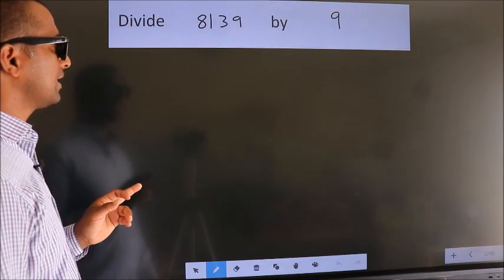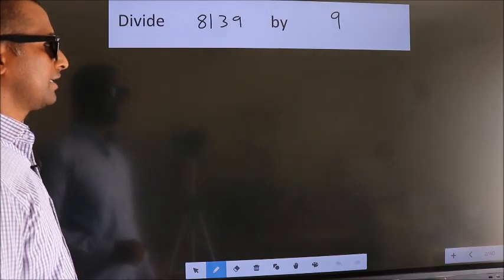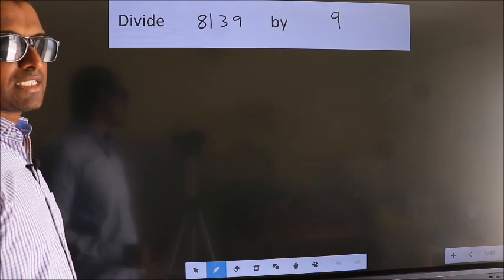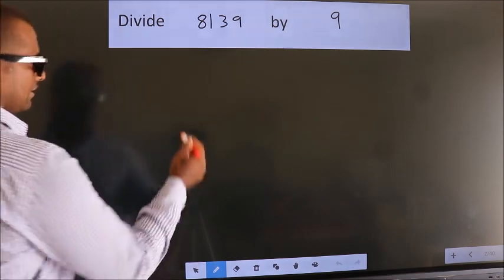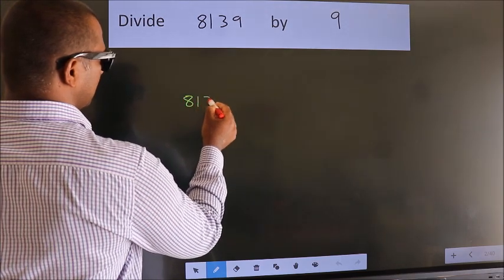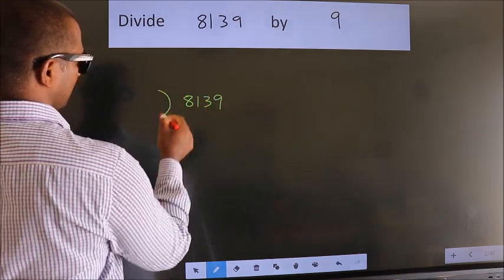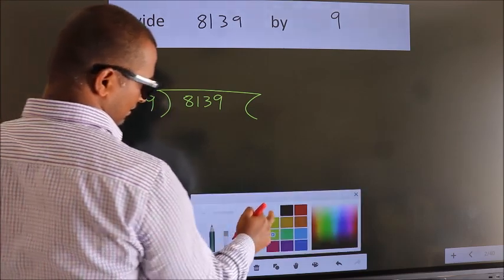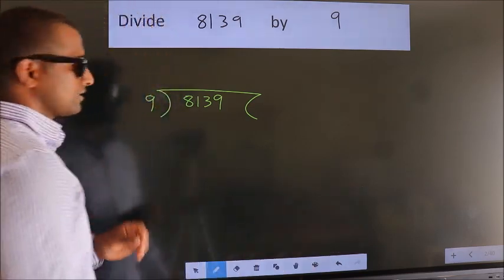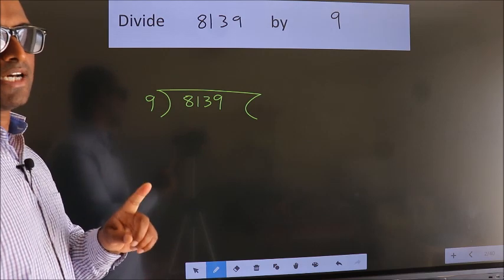Divide 8139 by 9. To do this division, we should frame it in this way: 8139 here, 9 here. This is your step 1.